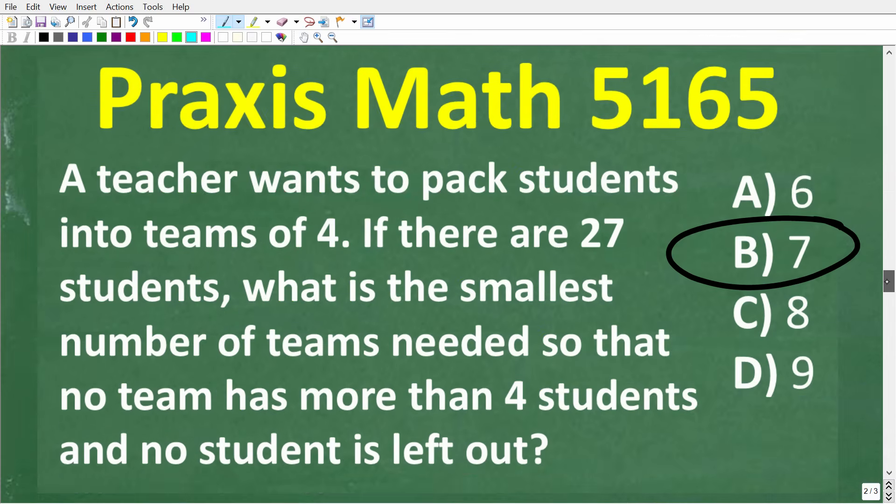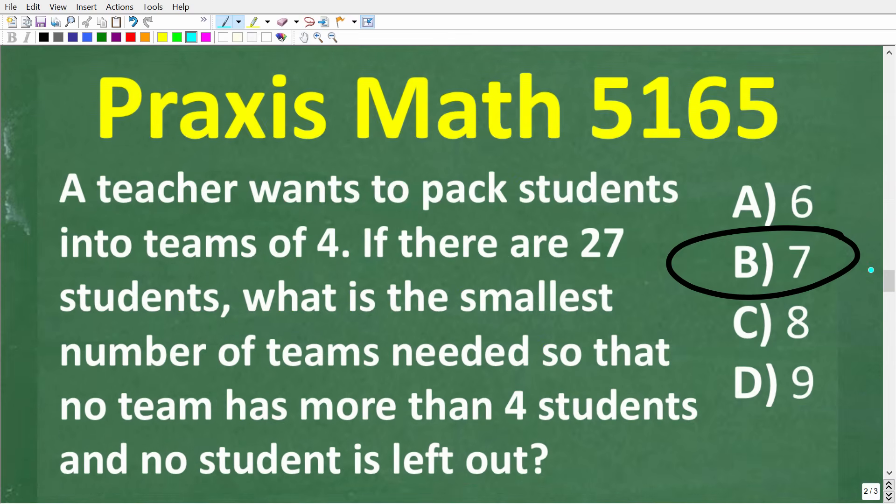So going back to the problem, of course, the correct answer is B. A teacher wants to pack students into teams of 4. If there are 27 students, what is the smallest number of teams needed so that no team has more than 4 students. None of our teams have more than 4 students and no student is left out. So again, the correct answer here is B.